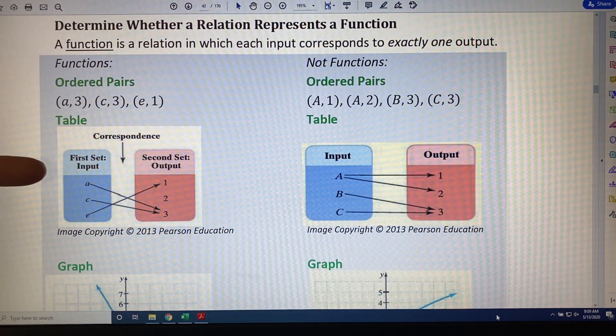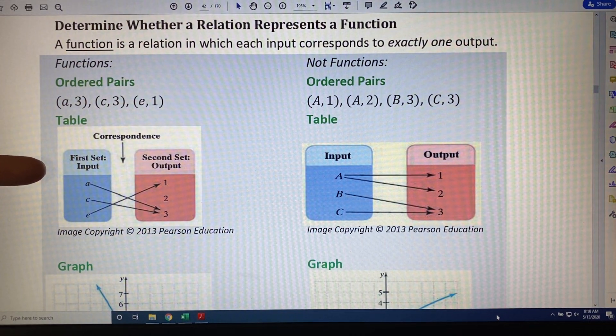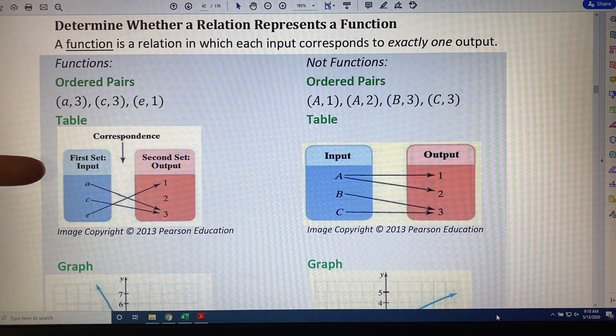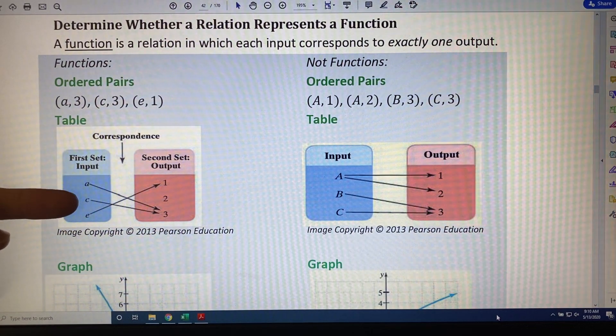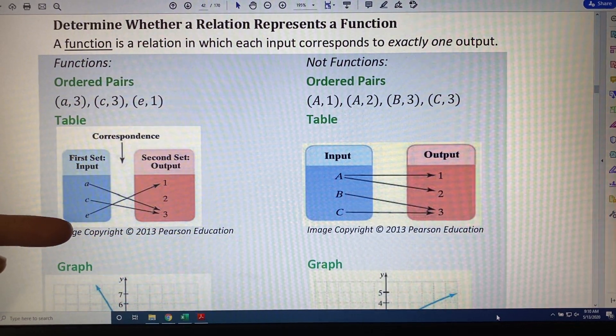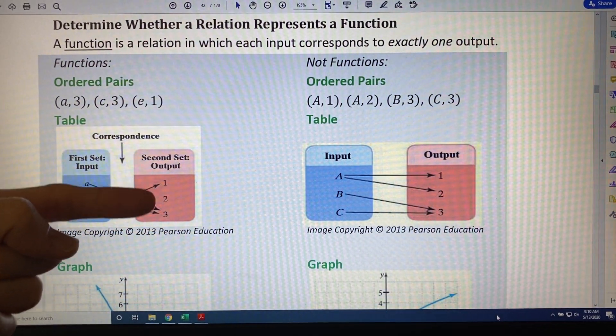All right, our next type of relation is a table. A table is a different way of representing the relationship between input and output. In this table, we have three different values: a, c, and e. And on the right, three different values: 1, 2, and 3.